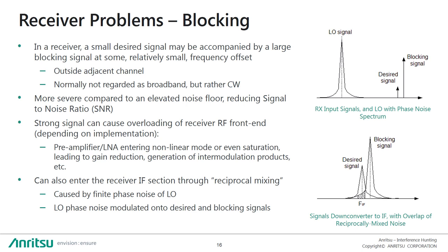The blocking signal can also enter the intermediate frequency, or IF, section of the receiver through a process called reciprocal mixing. The local oscillator used to mix the desired channel to the IF frequency exhibits a finite phase noise at this frequency offset. When the two signals are mixed by the LO, each one has the LO's phase noise spectrum modulated onto it, so the downconverted band consists of two overlapping spectra, with the wanted signal suffering from significant noise overlap due to the tail of the blocking signal's spectrum.